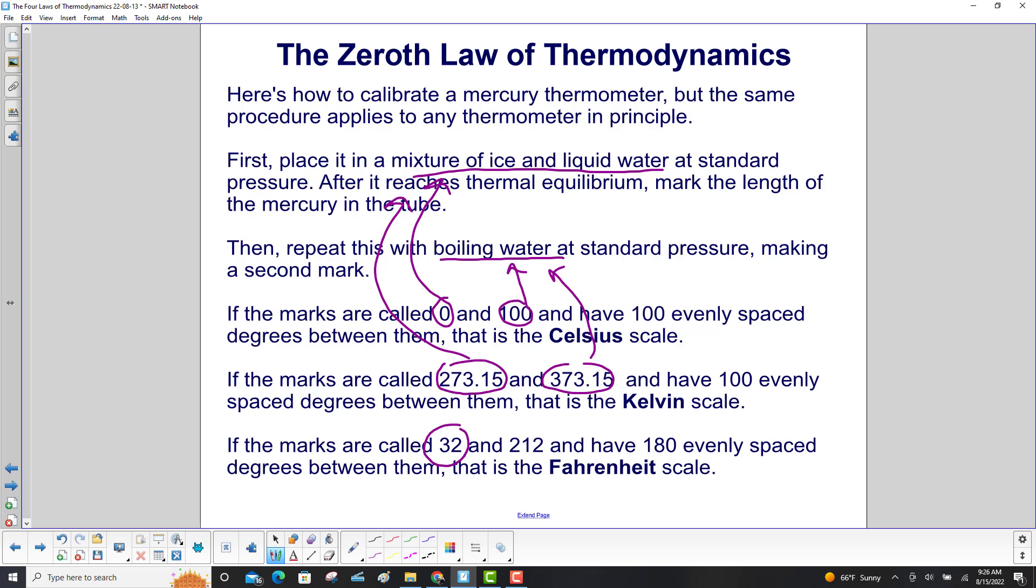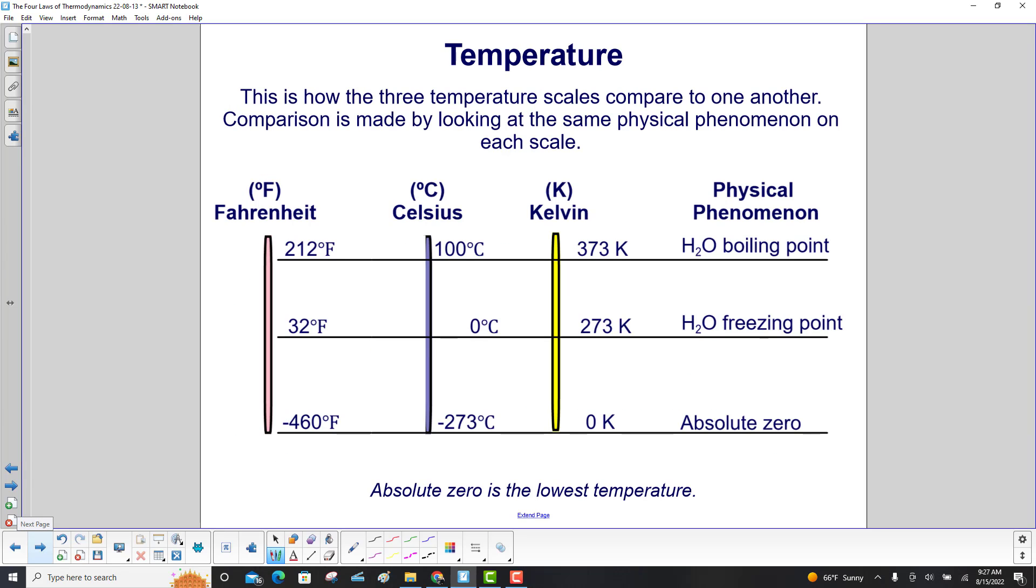Finally, if the marks are called 32 and 212 with 180 evenly spaced degrees between them, that is the Fahrenheit scale. This is how the three temperature scales—Fahrenheit, Celsius, and Kelvin—compare to one another.